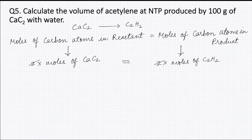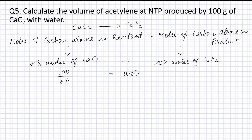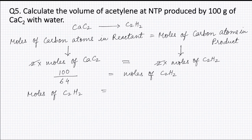Moles of CaC₂ is equal to weight of CaC₂, that is 100 grams, divided by molecular weight of CaC₂, that is 64 grams. Therefore moles of CaC₂ is equal to 1.5625 moles.